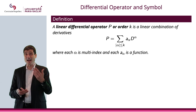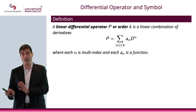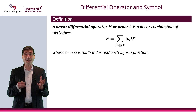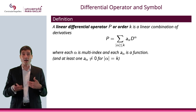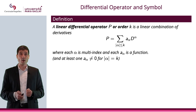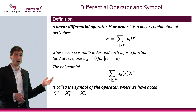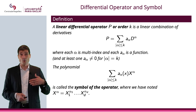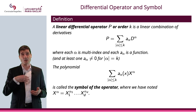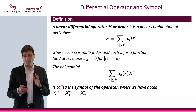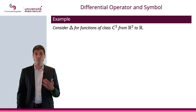The definition of a linear differential operator of order k is: P equals the sum of a_α · D^α over all multi-indices α with |α| ≤ k, where not all a_α with |α| = k are zero (otherwise it wouldn't be of order k). The symbol of the operator is the polynomial corresponding to that sum, but instead of the derivative D^α you substitute x raised to the power α — meaning x₁^{α₁} · … · x_d^{α_d}.